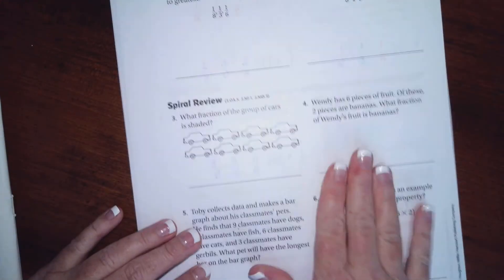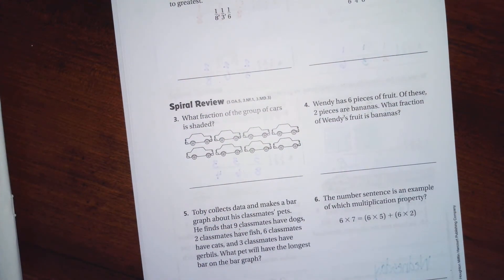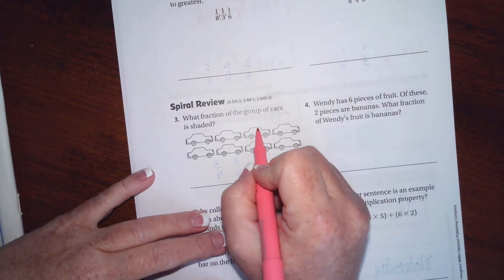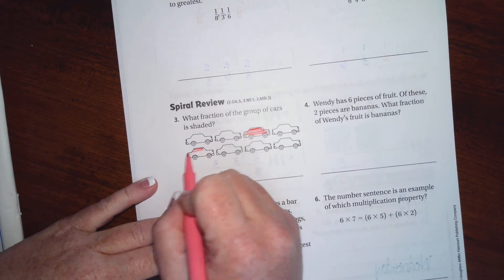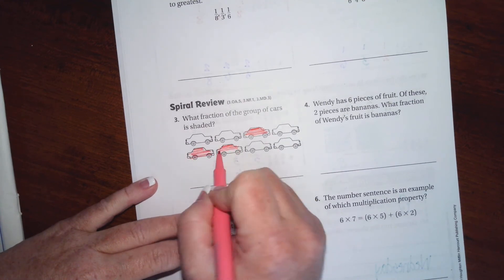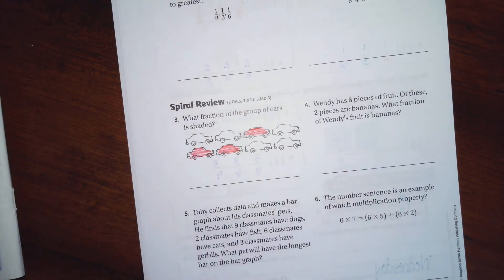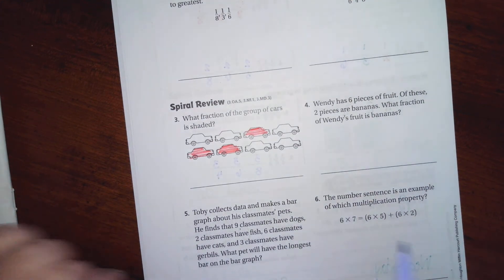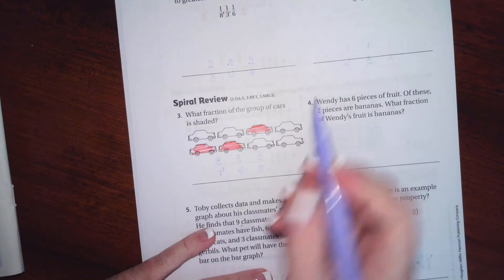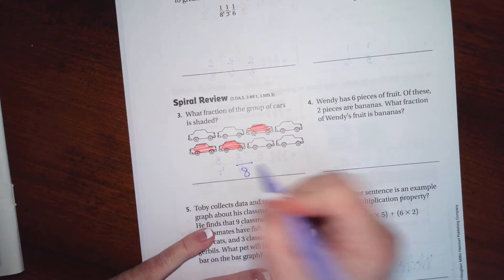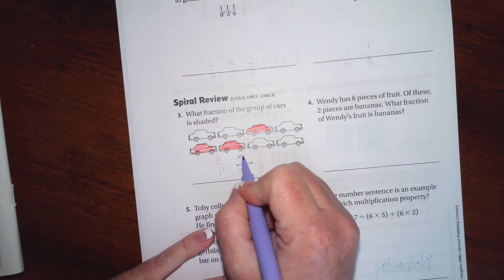All right, we're going to go over onto the back where you guys are going to do the lesson check just like always, and we are going to go down to number three. Now I'm going to color these in really fast because you guys can't see this on the photocopy. So this one is colored down, this one, this one, and this one. It says what fraction of a group of cards is shaded? Well, there's eight cards all together, so our denominator is eight, and then there's one, two, three that are shaded. Done, three-eighths.